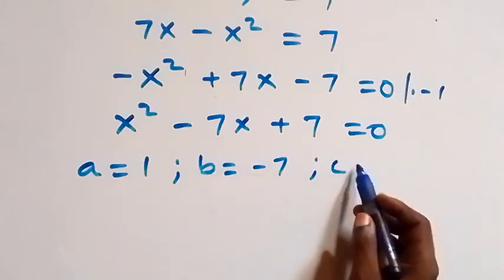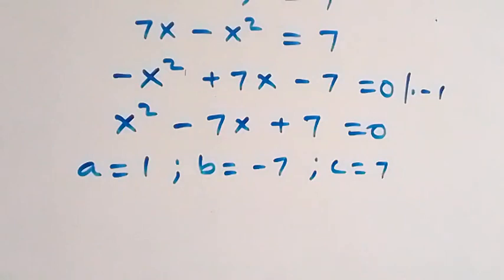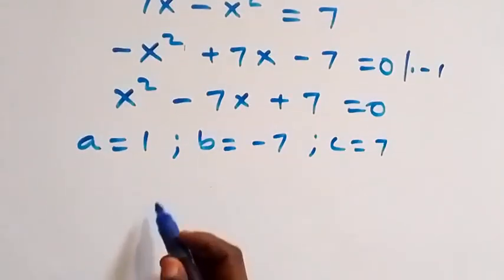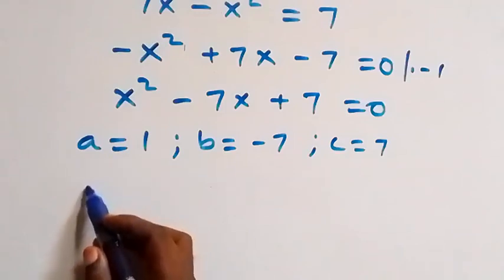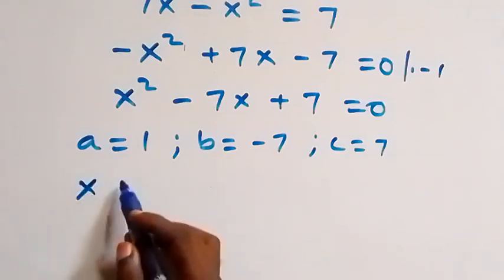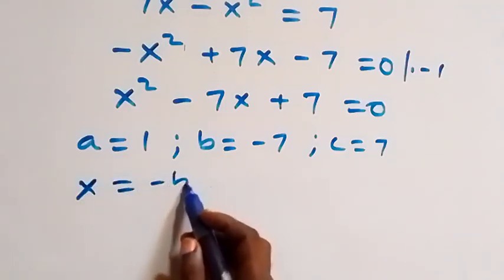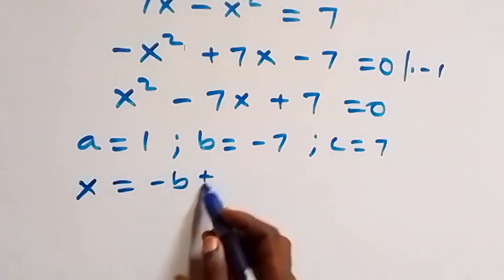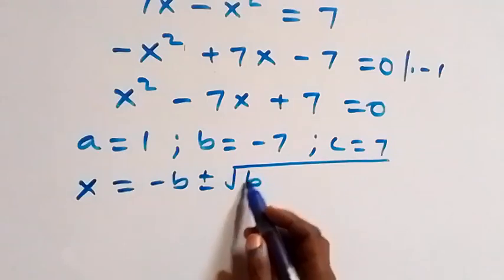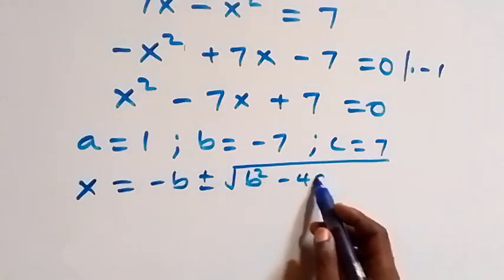We have a equals one, b equals negative seven, and c equals seven. From the quadratic formula, x equals negative b plus or minus square root of b squared minus four ac, all over two a.